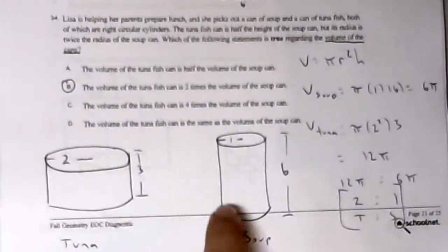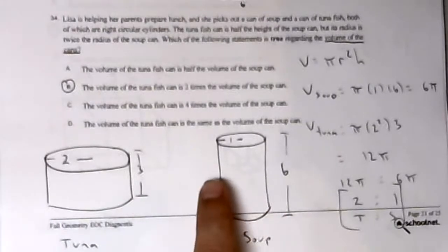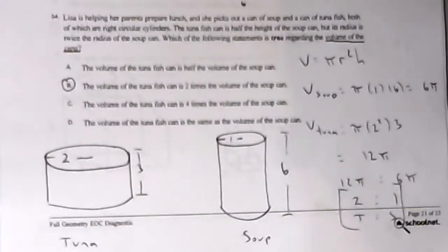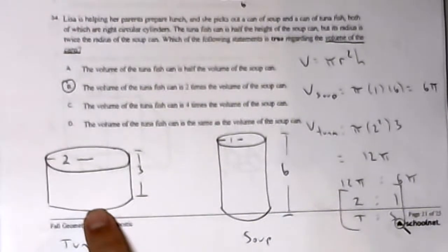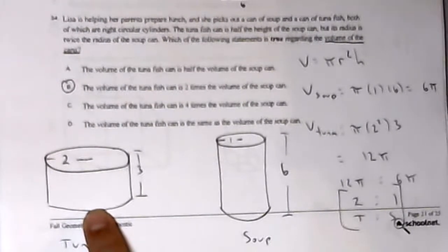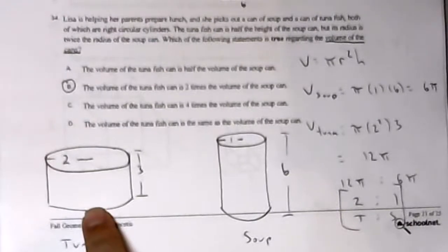Lisa is helping her parents prepare lunch. We have two cans: a can of tuna and a can of soup. It wants to know which of the following is true regarding the volume of the two cans. The tuna can is half the height of the soup can, but its radius is twice the soup can. So what I do is I pick some dimensions.